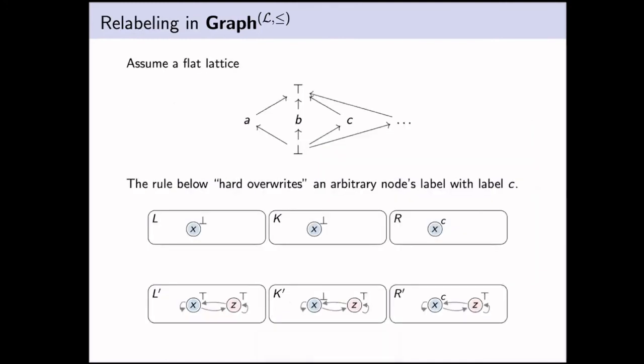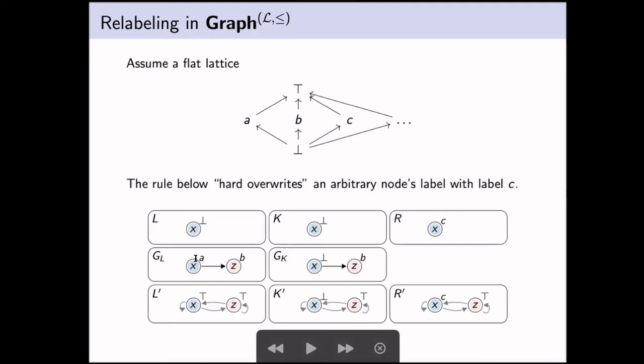How can we use this to relabel? Let's assume we have some flat lattice over here as depicted. And then the rule below will hard override an arbitrary node in an arbitrary context with an arbitrary label. It will override the label with label C. So the label bounds range from bot to top. And if you look in L', any context around it is allowed. So this is an example host graph. Then when we do the pullback here, the meet of A and bot is bot, and the meet of B and top is B, so we get this graph. Intuitively, you can think of the bot in K' as an instruction to forget a label and the top as an instruction to preserve a label.